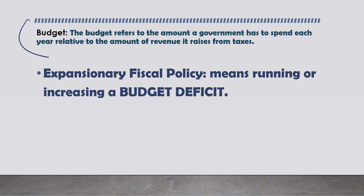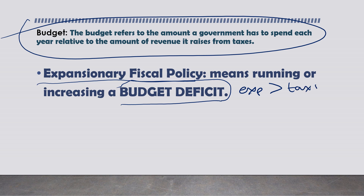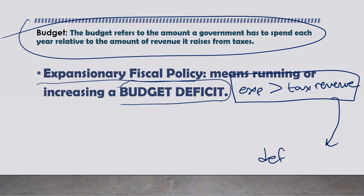The budget refers to the amount the government has to spend each year relative to the amount of revenue it raises from taxes. An expansionary fiscal policy means running or increasing a budget deficit - when public expenditure is greater than total tax revenue, there is a budget deficit, and the government will have to borrow money to finance it.